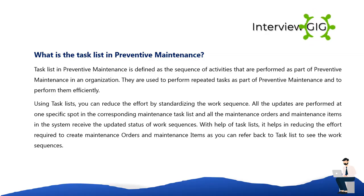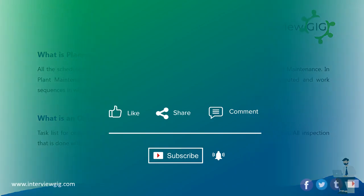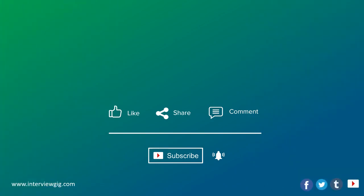All scheduled activities including inspection, maintenance, and repairs come under planned maintenance in plant maintenance. You define the time intervals and work sequences in which work steps are to be executed. An ongoing maintenance task list contains work sequences based on current inspection. All inspections done without a regular schedule come under ongoing maintenance.